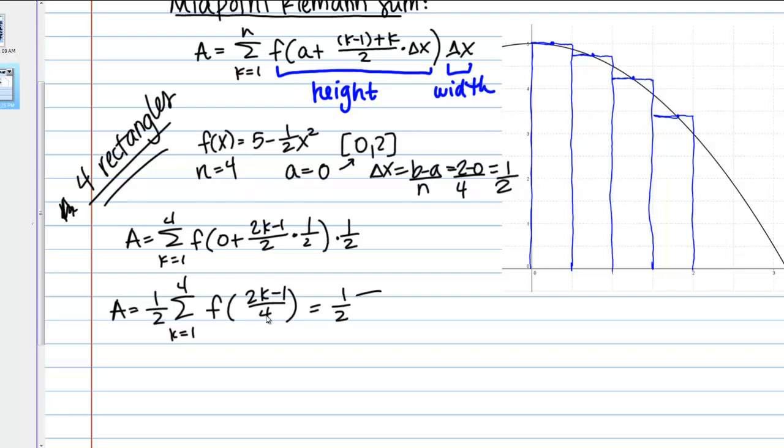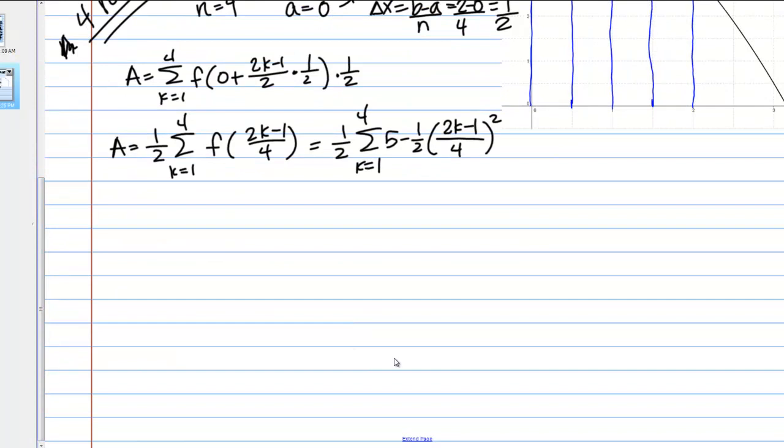What this notation then means, my next step is going to be to take 2k minus 1 over 4 and plug it into my function. If I do that, it's going to look like this. My function is 5 minus 1/2 x squared, so 5 minus 1/2. I'm taking this whole expression and plugging it in for x. All of that's squared. Now I need to work all this out because ultimately I'm looking for a number. I'm looking for a numeric value. I need to get this to a form where I can use my summation formulas. 1/2, and I still have my sum, 5 minus 1/2 times, this is 2k minus 1 times 2k minus 1 because it's squared over 16.